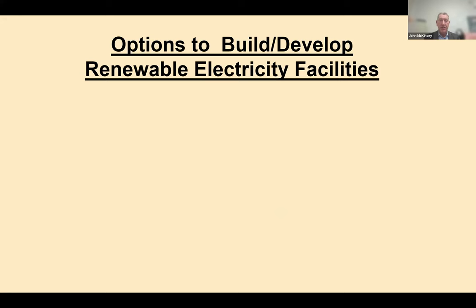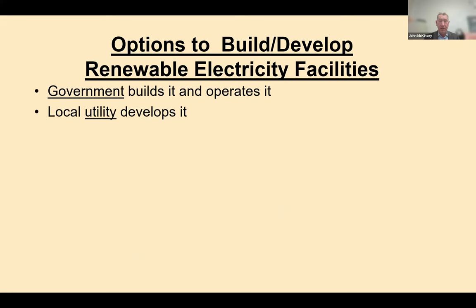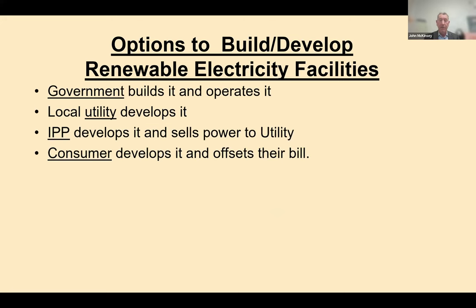From a macro policy perspective, there are several ways to build renewable electricity facilities: the government could build and operate it, a local utility could develop it, an independent power producer could develop it and sell power to the utility, or a consumer could develop it to offset their bill directly. Not surprisingly at this point, we're almost entirely depending on IPPs to develop it and sell power to the utility — which means we also now have a financial industry, contracting industry, and all sorts of other aspects driving this.